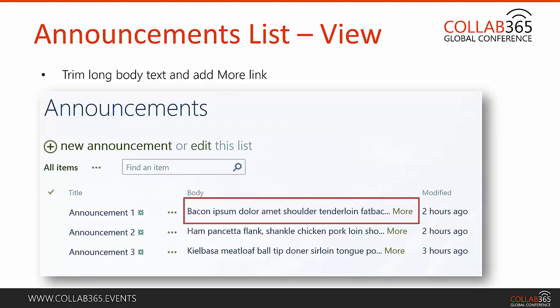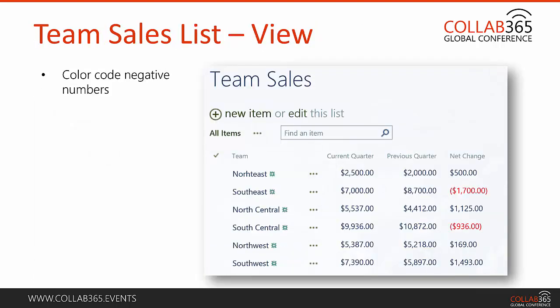I have an announcements list where I've taken the body of each announcement and trimmed it down, showing just the first portion of text and adding a 'more' link. When clicked, it opens the full announcement in a new window. This helps with usability by avoiding excessive scrolling — users get a glimpse of each announcement and can click through to read the ones they want. Finally, I have a team sales list where JSLink color codes any negative numbers, giving users an immediate visual of which teams performed worse this quarter compared to the previous one.